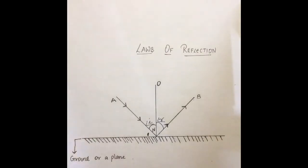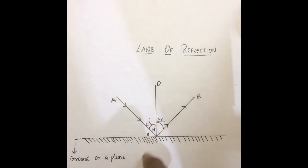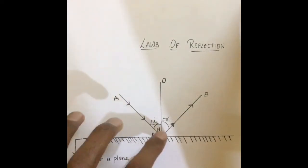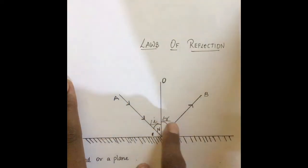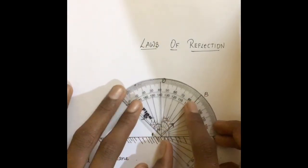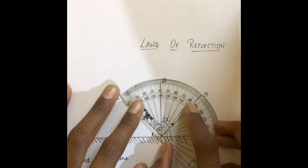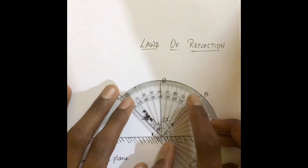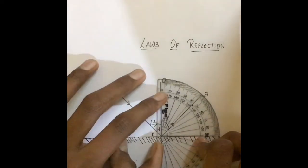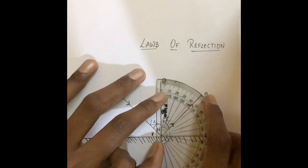Now that you have understood the terminologies related to the laws of reflection, I am going to state the laws. The first law states that the incident ray, the reflected ray, and the normal at the point of incidence all lie on the same plane. The second law states that the angle of incidence is equal to the angle of reflection. Let's measure that with the protractor — if I measure angle ANO, I get 44 degrees, and when I measure ONB, I also get 44 degrees — the same.